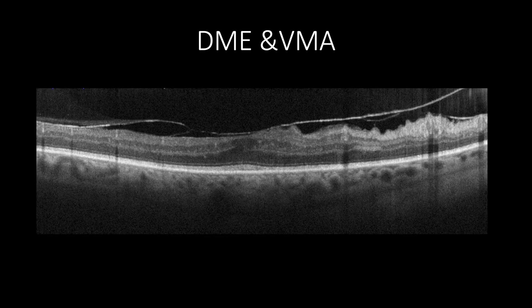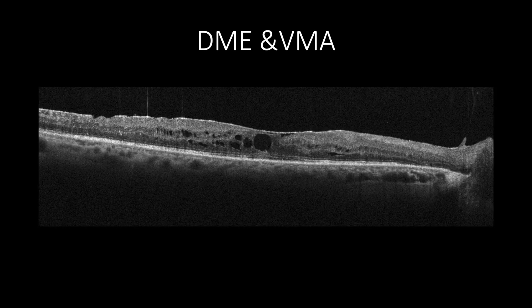OCT is the gold standard to diagnose the association of diabetic macular edema with vitromacular abnormalities, such as epiretinal membrane or vitromacular traction. An epiretinal membrane appears as a hyperreflective band causing corrugation of inner retinal tissues in the form of folds. In contrast, vitromacular traction appears as anterior-posterior oblique traction. Both epiretinal membrane and vitromacular traction may increase macular thickness and induce intraretinal cystic changes. When tractional elements cause the diabetic macular edema, the treatment of choice is surgical by performing pars plana vitrectomy.